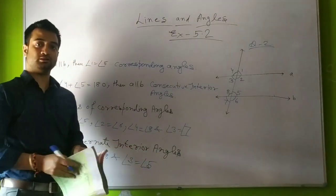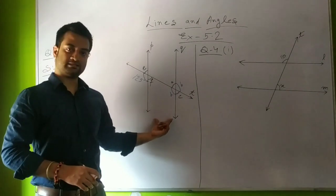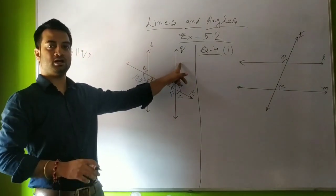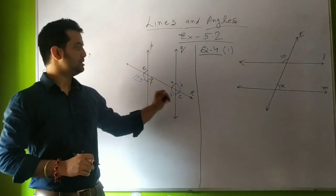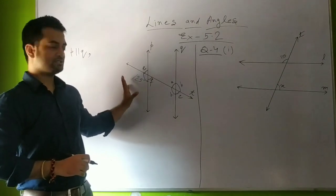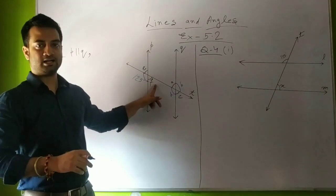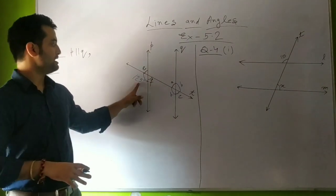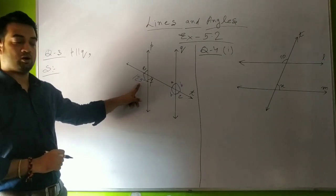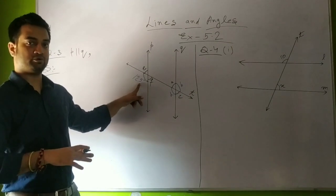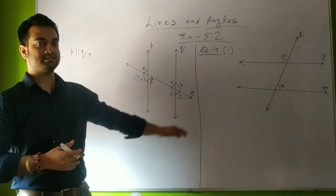Now we are moving to our third question. In this question a pair of parallel lines P and Q is given, and T is the transversal. If you look at this figure, A, B, C, D, E, and F are six unknown angles, and only the measurement of one angle is given: 125 degrees. On the basis of this information we have to find the value of all the unknown angles.